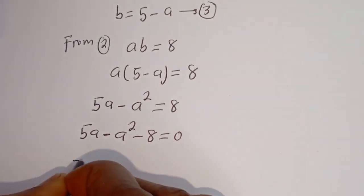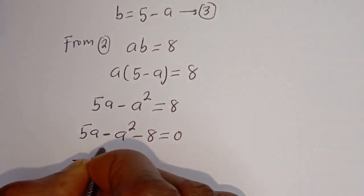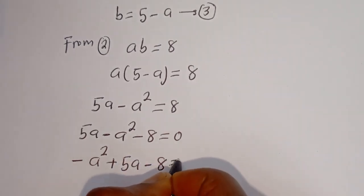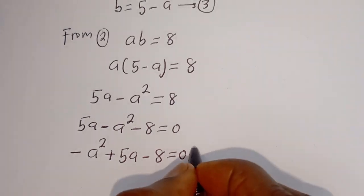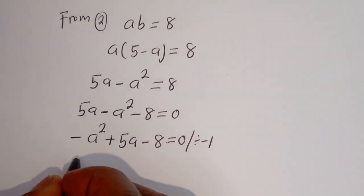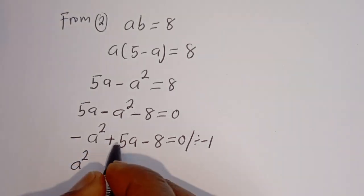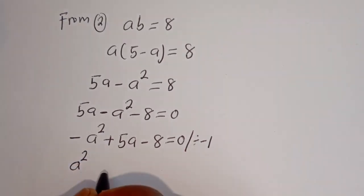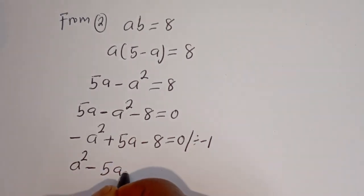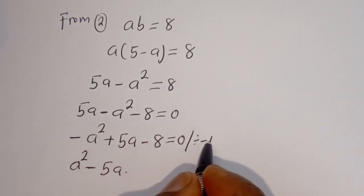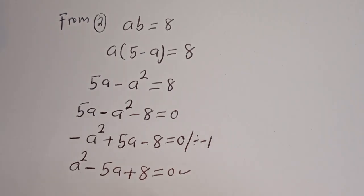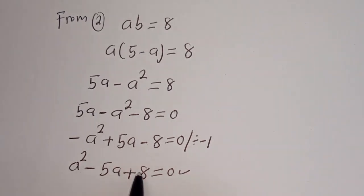Then this gives us 5A minus A squared minus 8 is equal to 0. Let's rearrange this: we have minus A squared plus 5A minus 8 is equal to 0. We can now divide all through by minus 1. This gives us A squared minus 5A plus 8 is equal to 0. This is a quadratic equation.